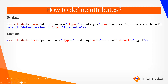Using an attribute to store a large amount of data decreases the readability of an XML file. The basic syntax for defining an attribute is: xs:attribute, name equals attribute name, type equals data type — which can be integer, string, or date. The 'use' property can be set to required, optional, or prohibited. You can also set a default value, which is used when the end user does not provide any value.